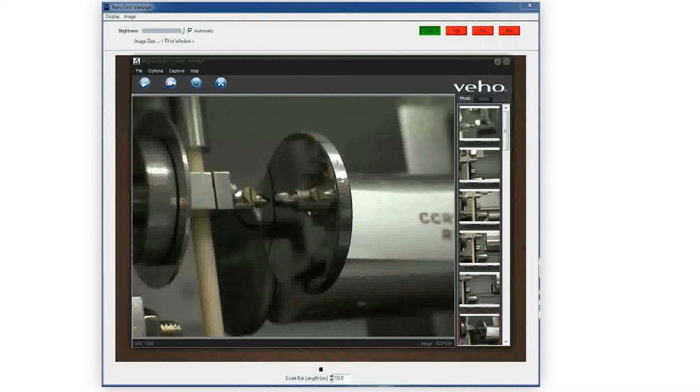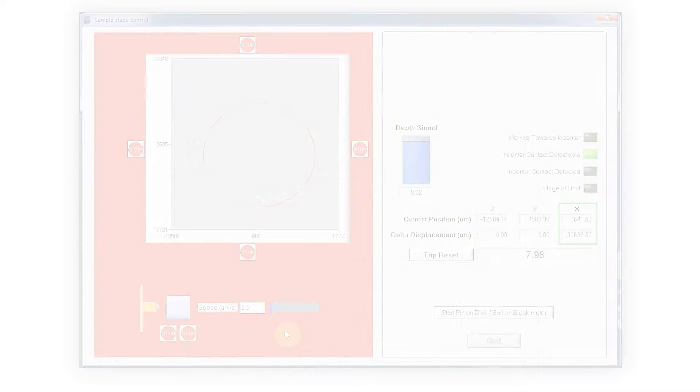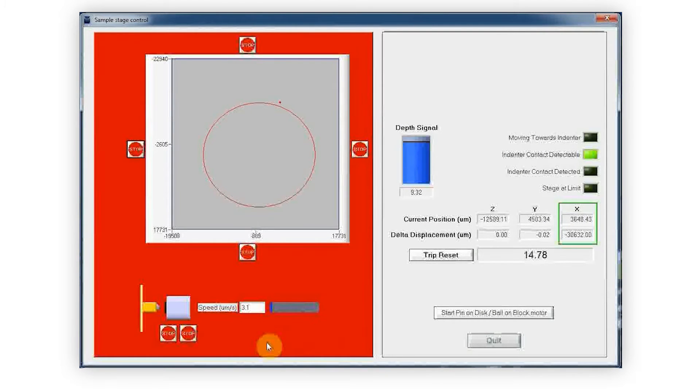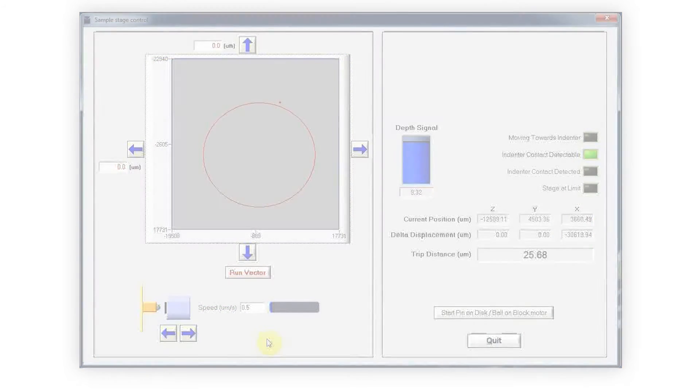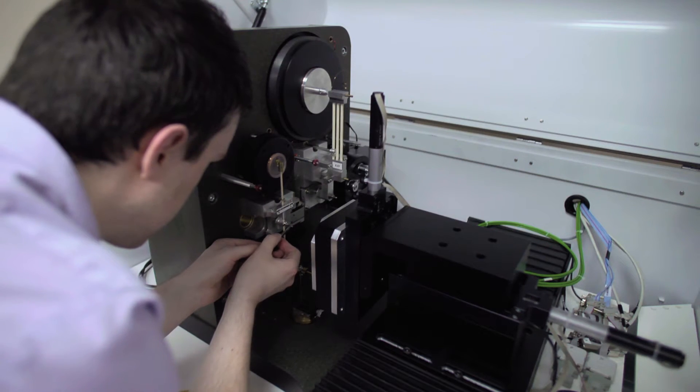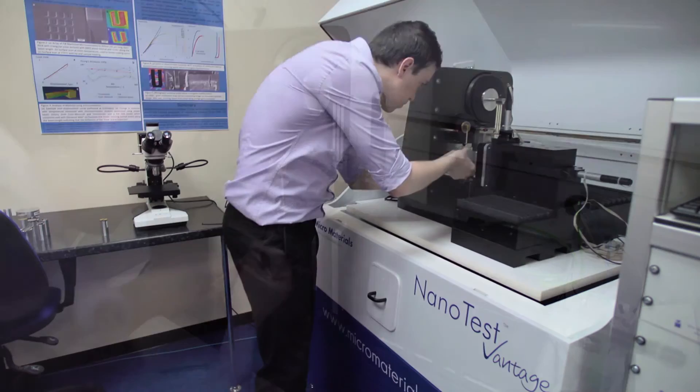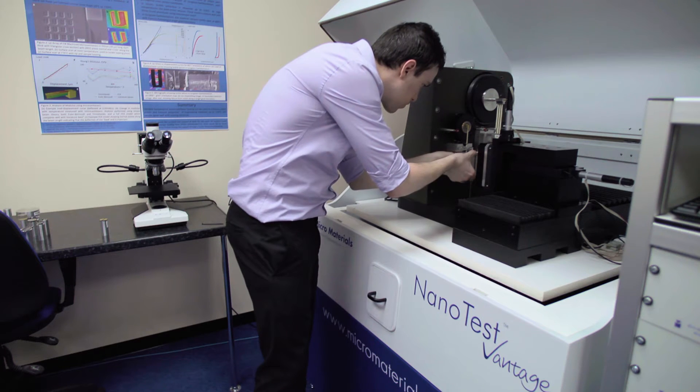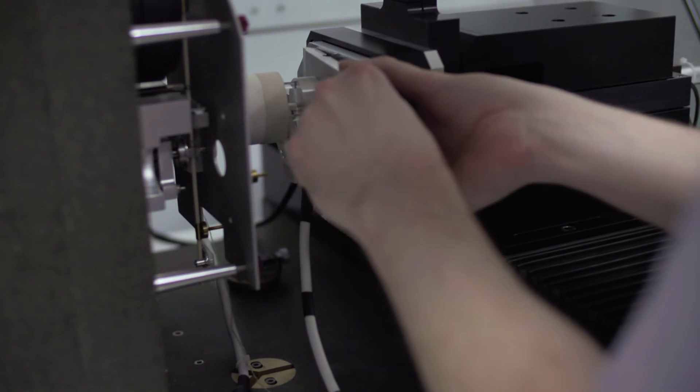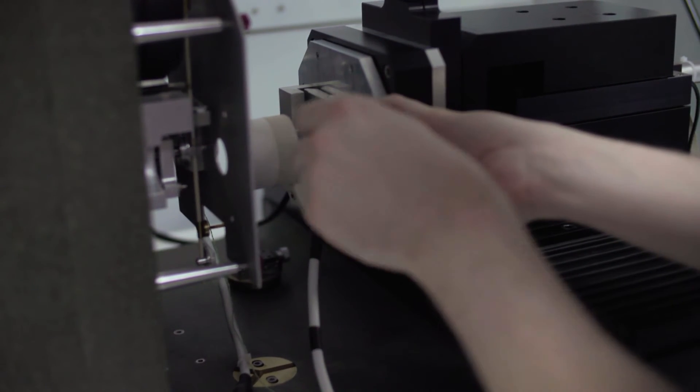The NanoTest Vantage includes, as standard, a four-objective optical microscope and a 3D nano-positioner for the imaging and positioning of experiments with nanometer resolution. In one instrument platform, it is possible to combine multiple nanomechanical test techniques over multiple force scales and multiple environments to provide the most complete solution on the market.